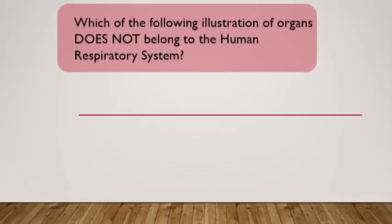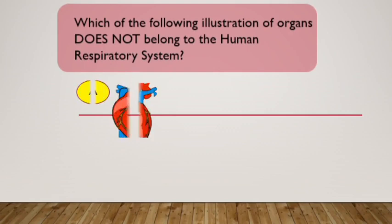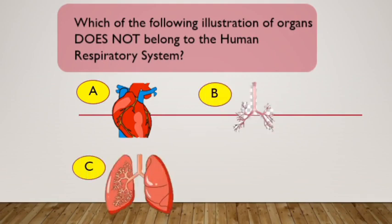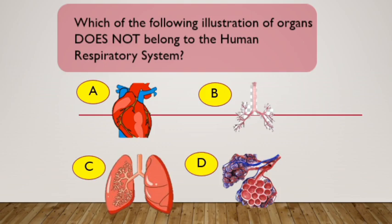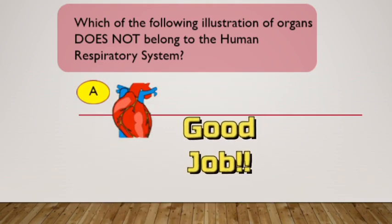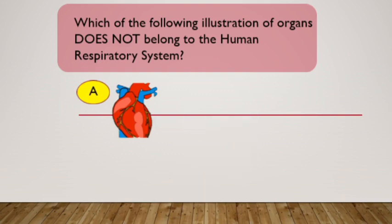Which of the following illustration of organs does not belong to the Human Respiratory System? A. Heart, B. Trachea, C. Lungs, D. Alveoli. I will give you 5 seconds to answer the said question. Time's up! The correct answer is A. Heart. Good job! Let us proceed to the second question.